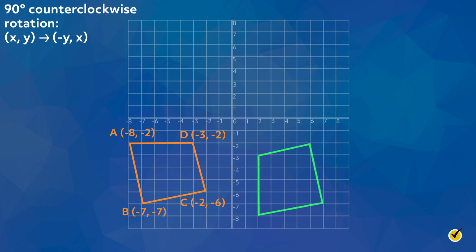So point A (-8, -2) becomes point A' (2, -8). Point B (-7, -7) becomes point B' (7, -7). Point C (-2, -6) becomes point C' (6, -2). And point D (-3, -2) becomes point D' (2, -3).